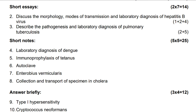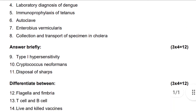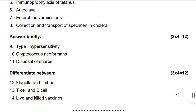Answer briefly — 12 marks total. Topics include: Type I hypersensitivity, Cryptococcus neoformans, and disposal. Differentiate between the following questions — 12 marks.